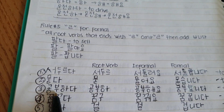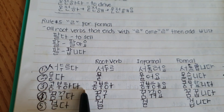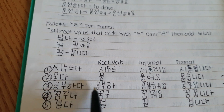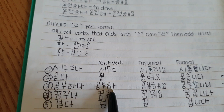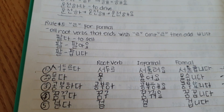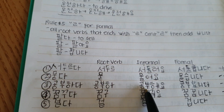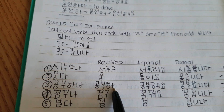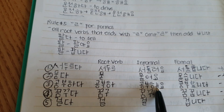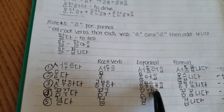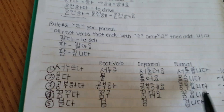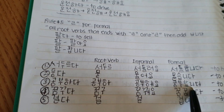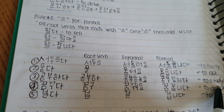The next example is 'gongbuhada', meaning 'to study'. You remove the 'da' to get the root verb 'gongbuha'. The informal is 'gongbuhaeyo' — you change the 'a' then add 'yo'. The formal is 'gongbuhamnida'.